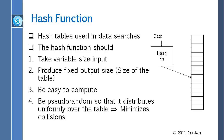A hash function should take variable size input, produce a fixed size output, be easy to compute, and be pseudo-random so that it distributes equally over the table and minimizes collisions. There are lots of functions for hash, and CRC checksums are among the best. But they are not very good for cryptographic purposes.